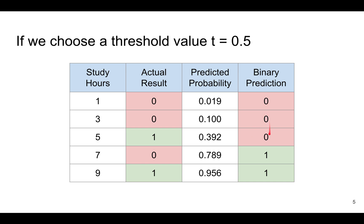If you change the threshold value to 0.2, then that changes this prediction. And if you change it to 0.8, then only the last person is predicted to pass.